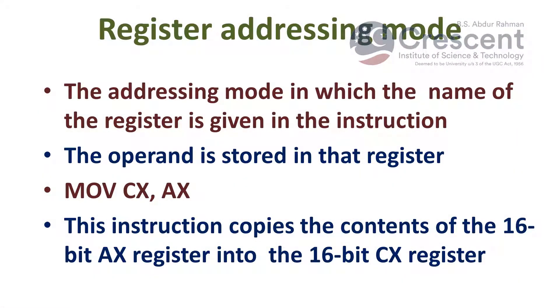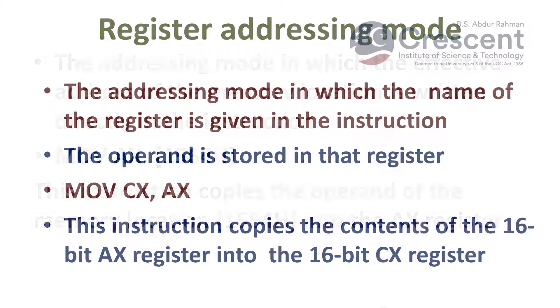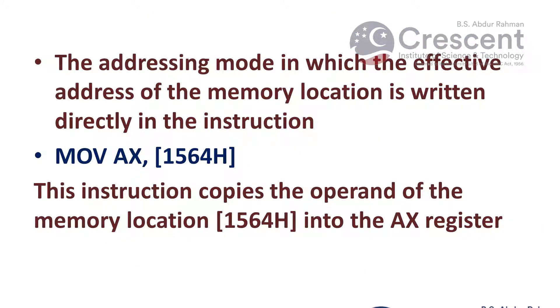Register addressing mode is the addressing mode in which the name of the register is given in the instruction, and the operand or data is stored in that register. For example, MOV CX, AX — this instruction copies the 16-bit AX register value into the 16-bit destination register CX.